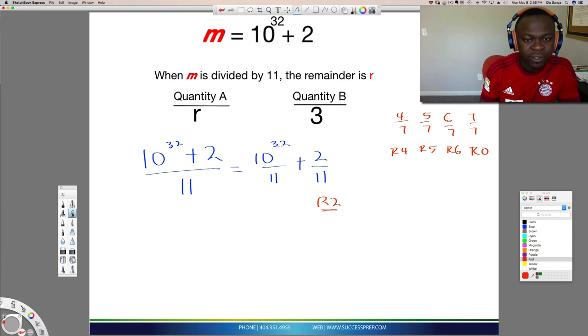So let's take care of this guy over here, the 10 to the 32 over 11. Let's take care of that on the side here. So 10 to the 32, again, is a large number. And trying to solve a large number like that is going to be a problem. So how about we look at smaller relatives of it? So what do I mean?